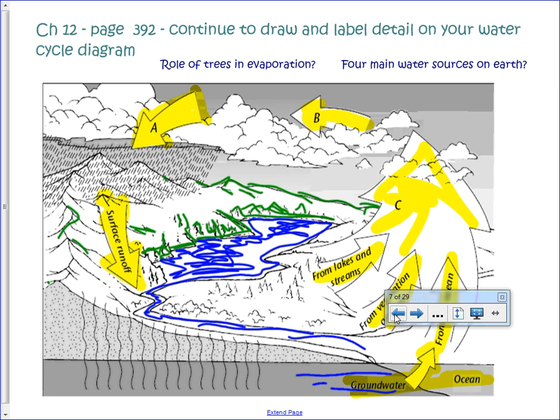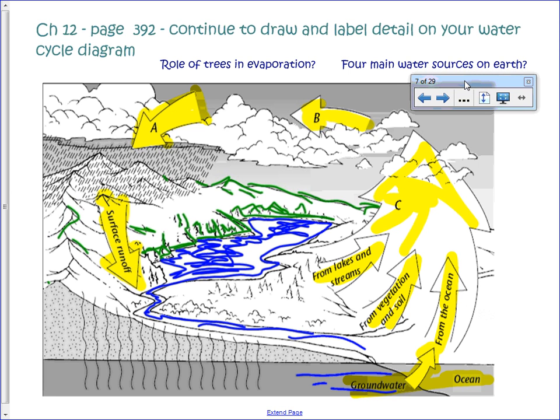Maybe this one. And so this one is showing the same thing just in a little bit more detail, but lakes, streams, vegetation, soils. This is going to be evaporation of course here and condensation, it turns into clouds, and then we have precipitation.